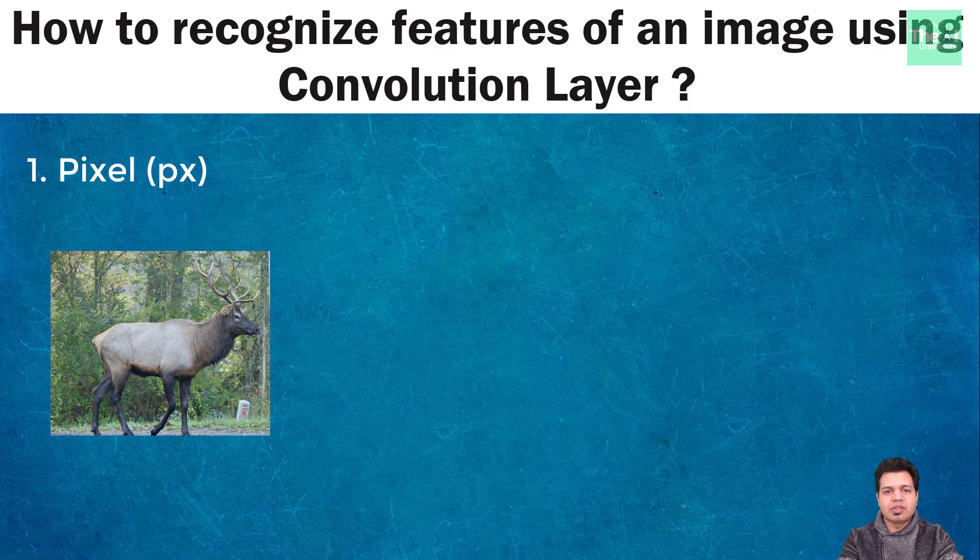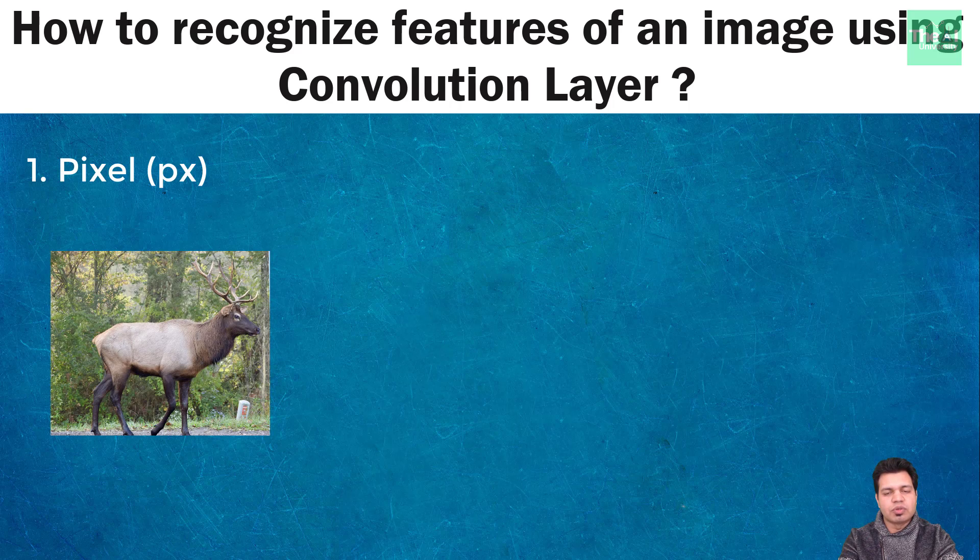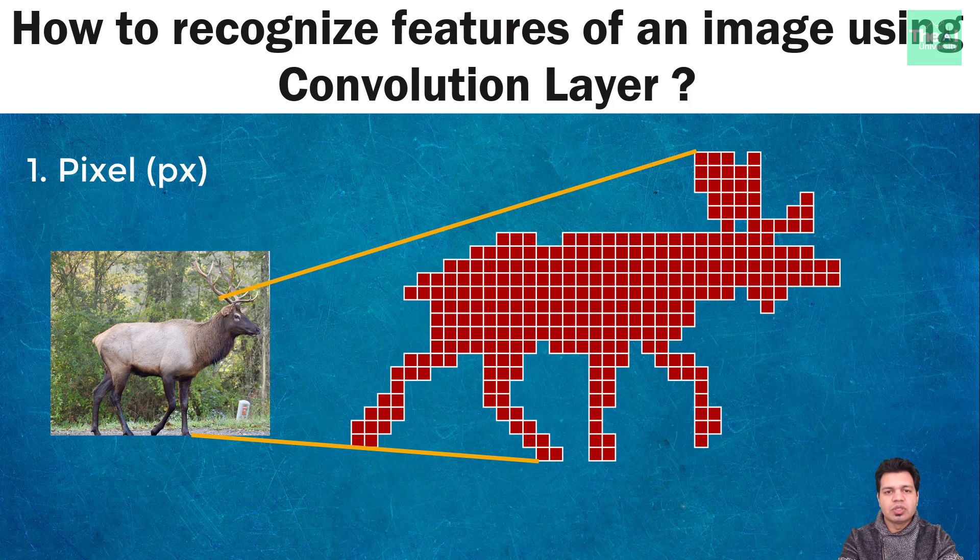So on the screen, you can see that there is an image of Moose. This image is made up of thousands of pixels and we see this image in terms of pixels. Now each individual square box is a pixel and when these square pixels combine together, these make a complete image.